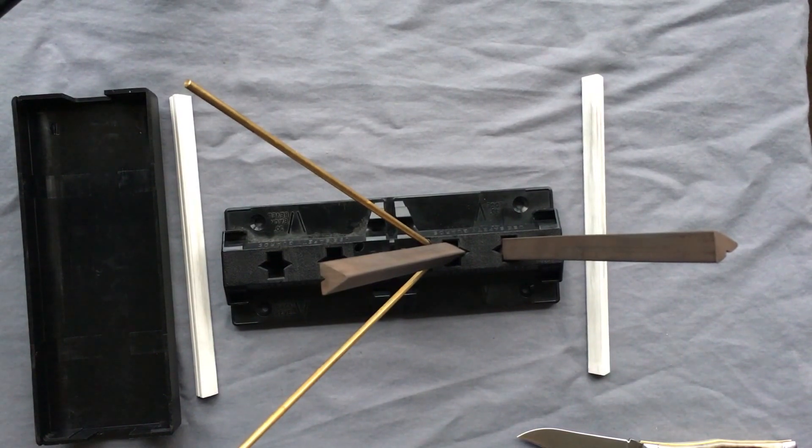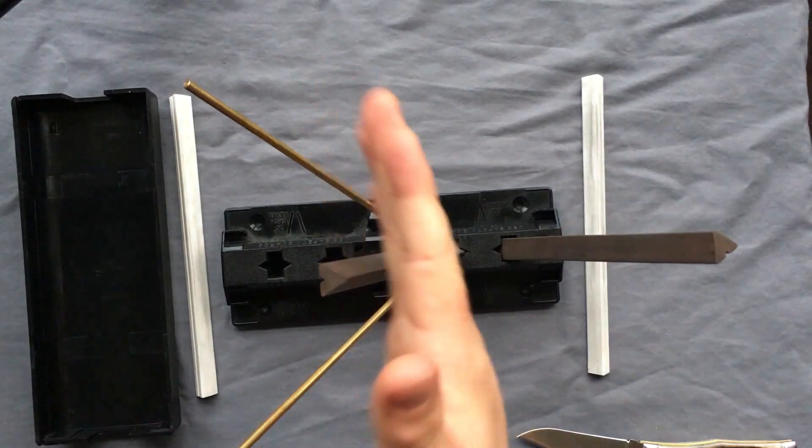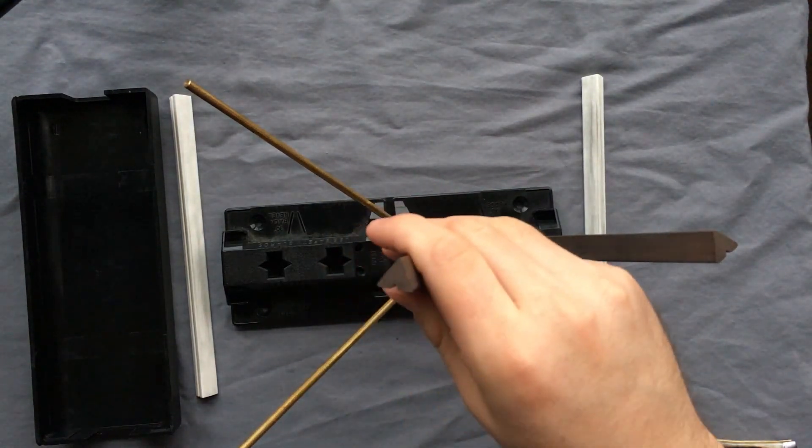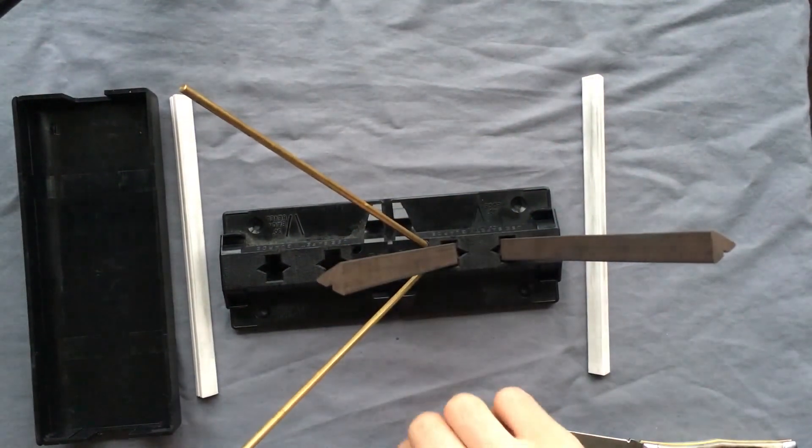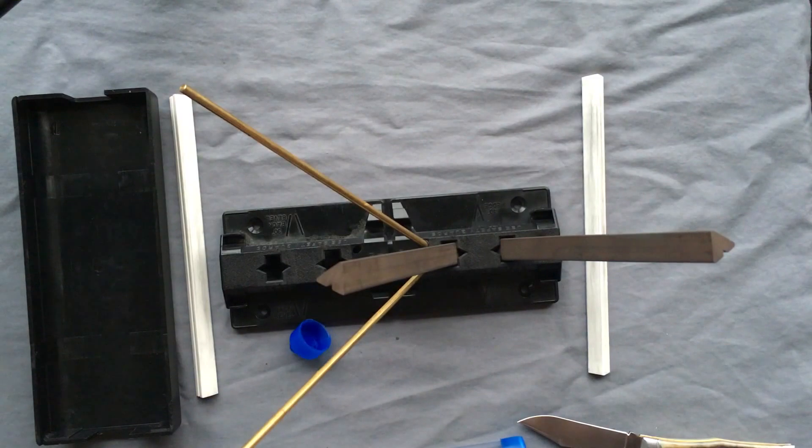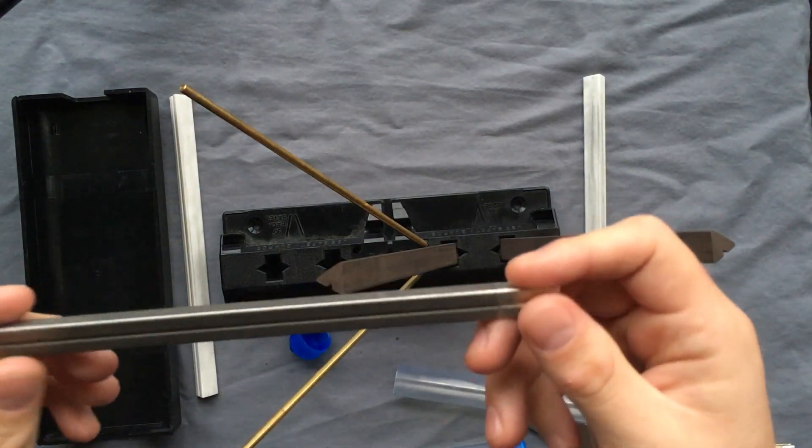Particularly if your knife is some kind of a more modern super steel. Something like S30V or M390 or, God help you, M4. This is not going to suffice to make a new angle on your blade. To that end, Spyderco sells the diamond rods for this.